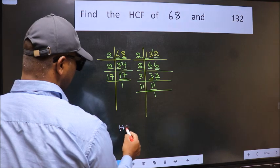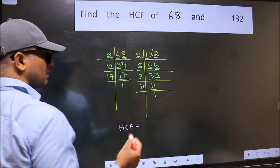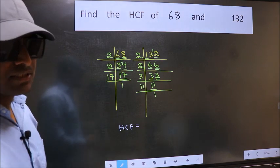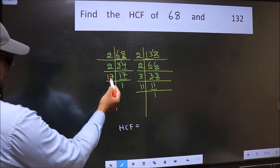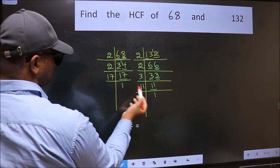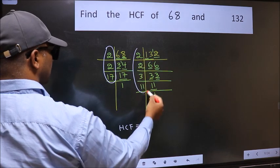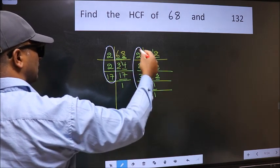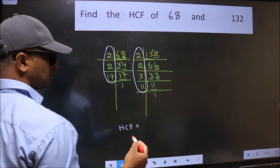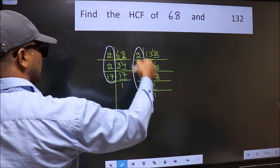Therefore, our HCF is the product of the numbers which should be present in these two places. That is here and also here. Here and also here. So now let us find the numbers which should be present here and here.